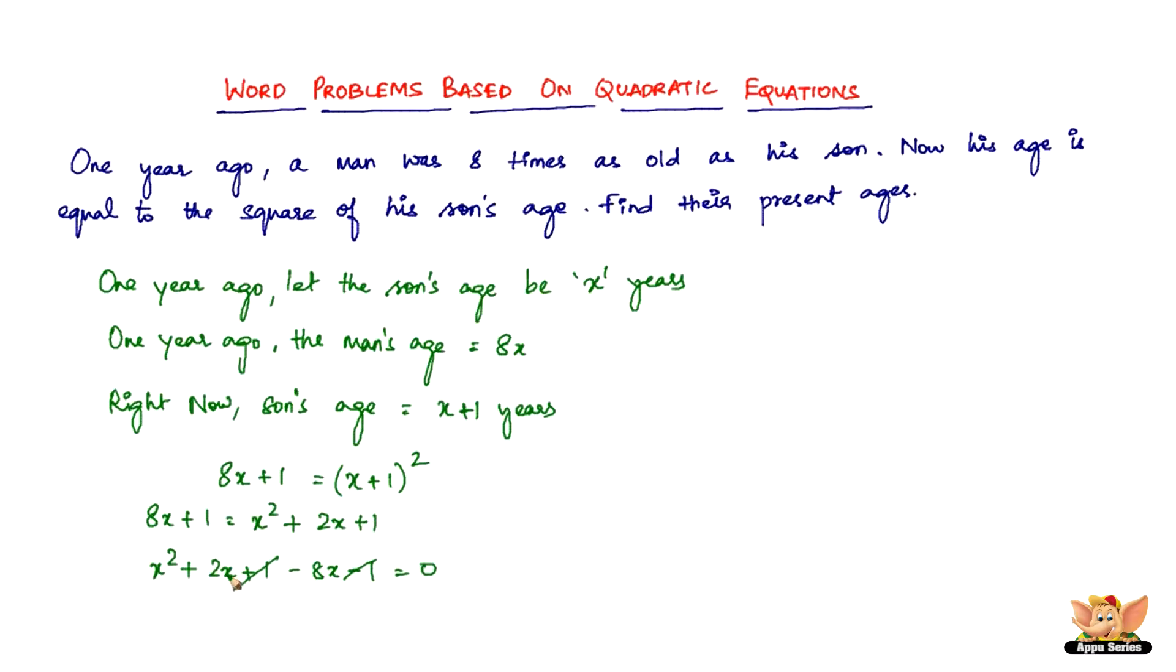So we're left with X²+2X-8X, which is X²-6X = 0. Factoring out X, you get X(X-6) = 0. So X = 0 or X = 6.